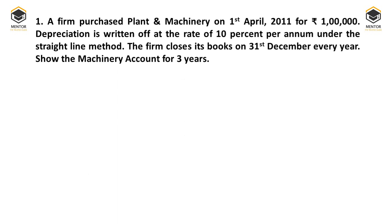We'll take up the first question. A firm purchased plant and machinery on 1st April 2011 for Rs. 1 lakh. Depreciation is written off at 10% per annum under the straight line method. The firm closes its books on 31st December every year. We are required to show the machinery account for three years.